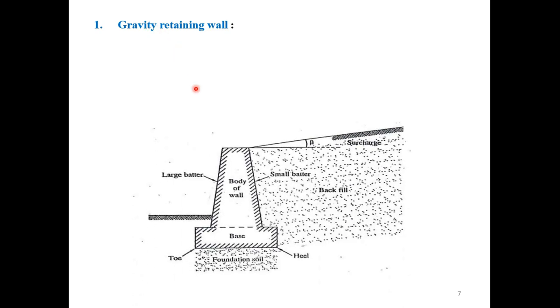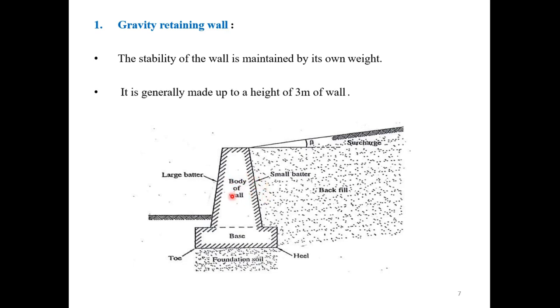Starting with the Gravity Retaining Wall — you can see in the picture — the Gravity Retaining Wall is maintained by its own weight. It is generally made up to a height of 3 meters.